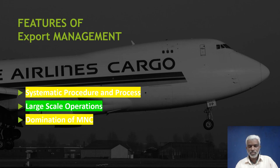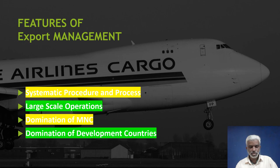A major share of foreign trade is captured by MNCs and TNCs — transnational corporations. Therefore, they dominate export management activities throughout the world. The next point is domination of developed countries. Most companies are from countries like the USA, Japan, and Germany, producing and selling good quality goods at low cost on a massive scale with the help of advanced technology. Rich and developed countries always dominate international business activities.